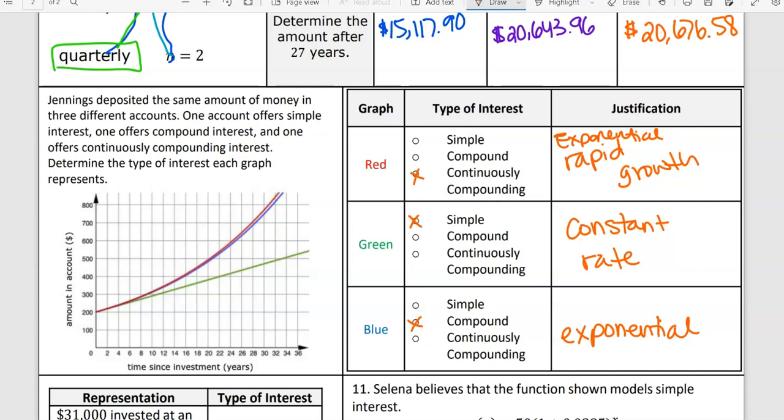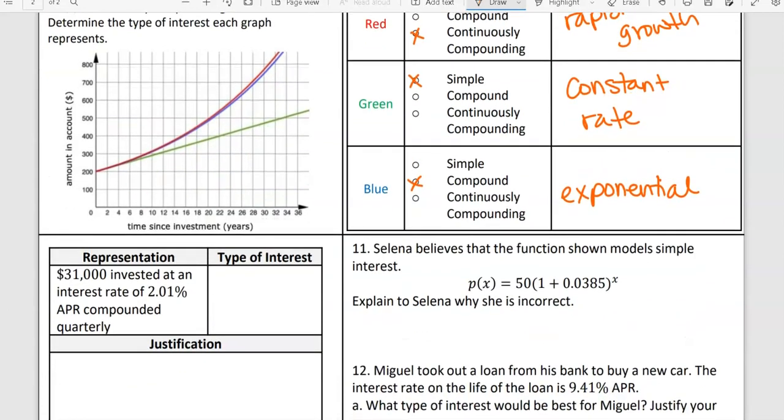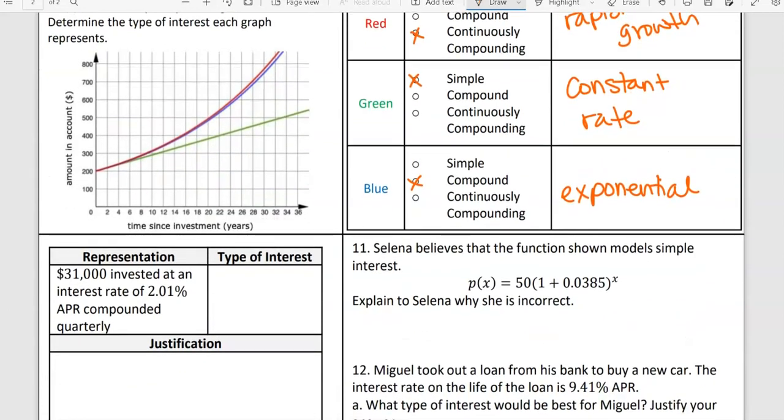So compounded and compounded continuously, pretty close together. Continuously though, just a tad bit more rapid. Which right there doesn't seem like it's much, but if you're talking about depending on how many years it's going by and what it's being compounded per year, to show the big difference.